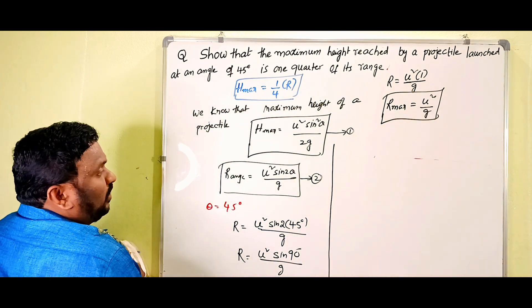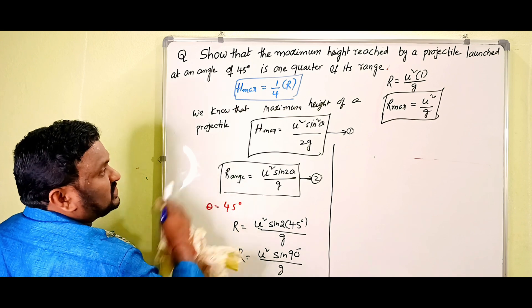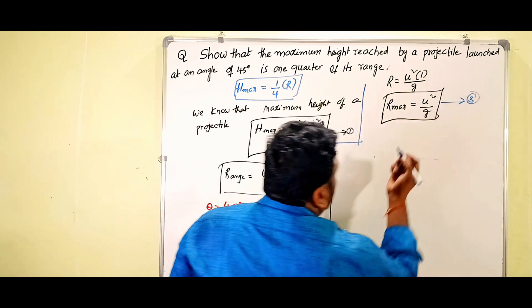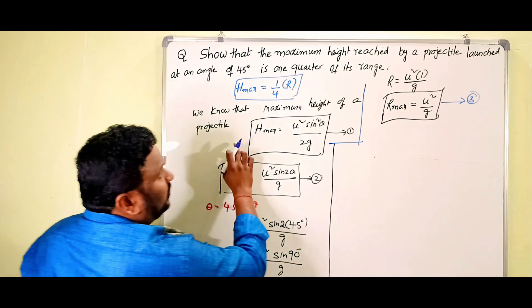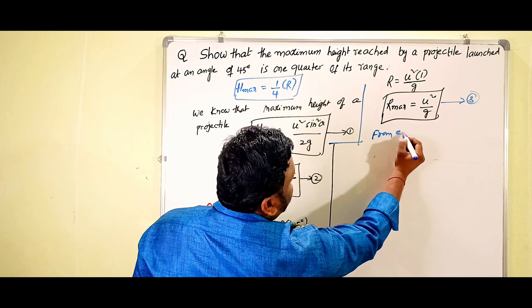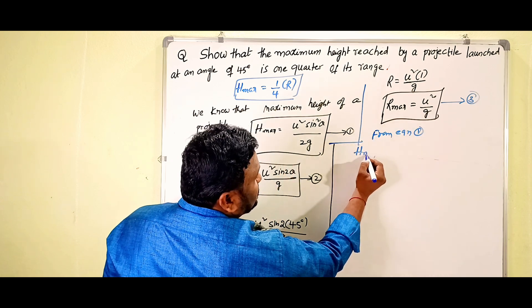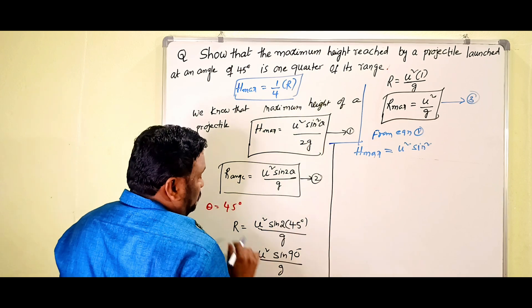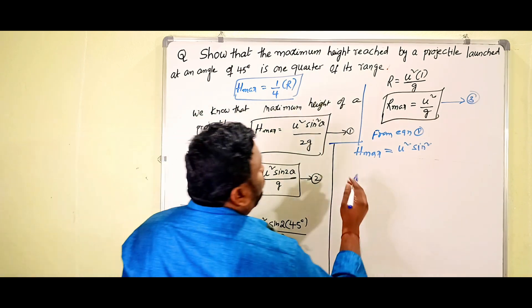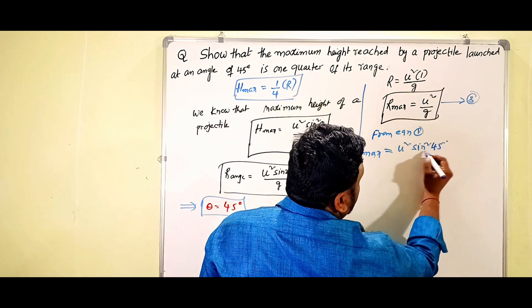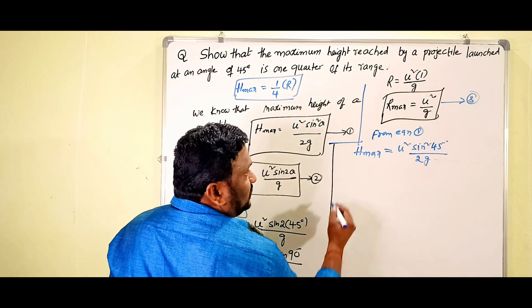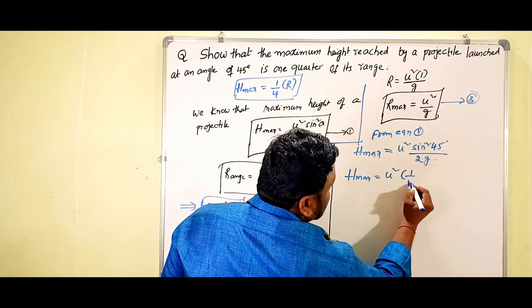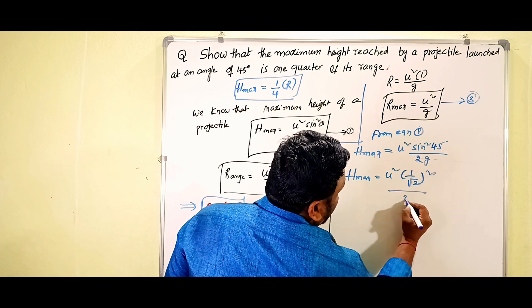Now we apply θ = 45 degrees to equation (1) as well. From equation (1): H_maximum = u² sin²(45°) / 2g. Since sin(45°) = 1/√2, we write sin²(45°) = (1/√2)² = 1/2. Therefore H_maximum = u² × (1/2) / 2g.